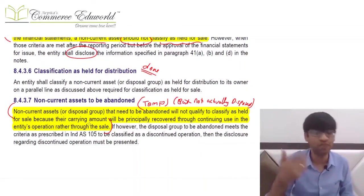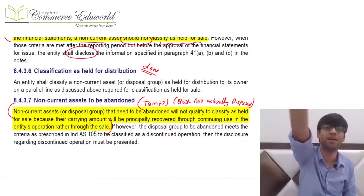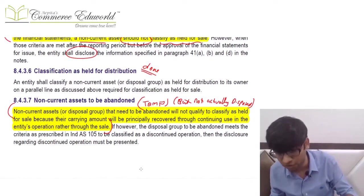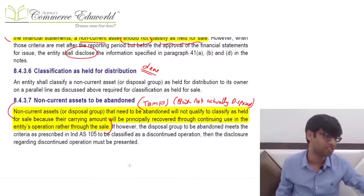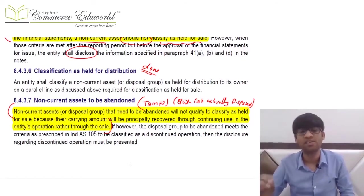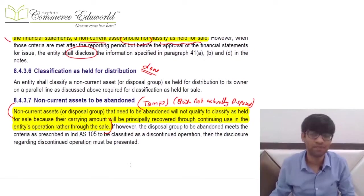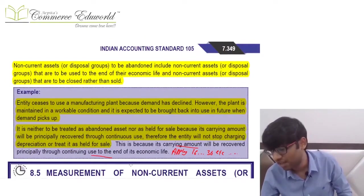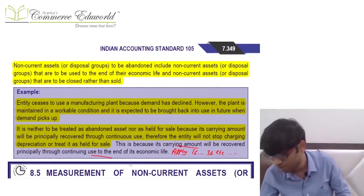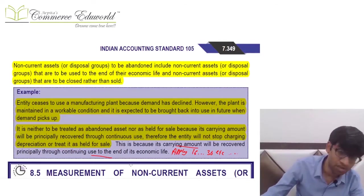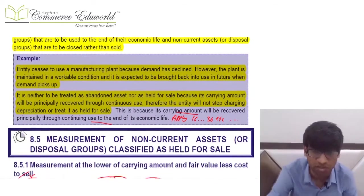If an asset is held for distribution to owners in their capacity as owners, it is treated like a held-for-sale asset and accounting is done accordingly. If a non-current asset is abandoned but not sold or held for sale, there is a chance that its value in use will be recovered through future use. Such an abandoned item is not considered a held-for-sale asset; it remains in the books, is depreciated as per IND AS 16, and impairment testing under IND AS 36 may apply.